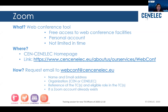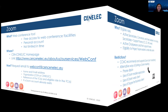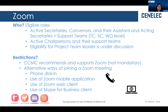The information that we need is your name, email address, organization, the reference of the TC and your role, and if there is already an existing Zoom account. The eligible roles are: active secretaries, conveners, assistants and support teams, and active chairpersons and their support teams.